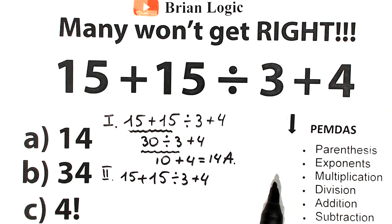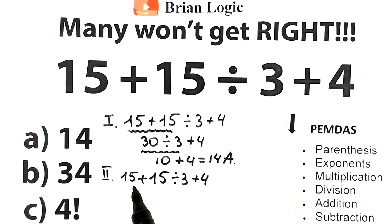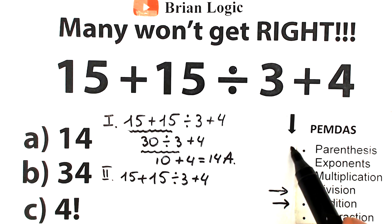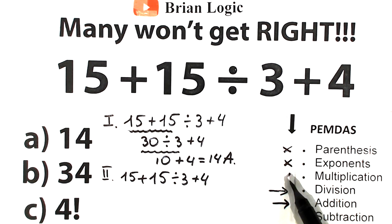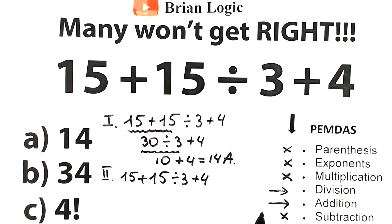PEMDAS is the most popular order of operations in the world. It works from the top to the bottom in strict order — parentheses has the highest priority, and addition/subtraction group has the lowest priority. Let's scan what elements we have in our challenge: we have addition, division, and addition. So overall we have addition and division. We have division here and addition after division. We don't have parentheses, exponents, multiplication, or subtraction. According to the order of operations, division has higher priority than addition.